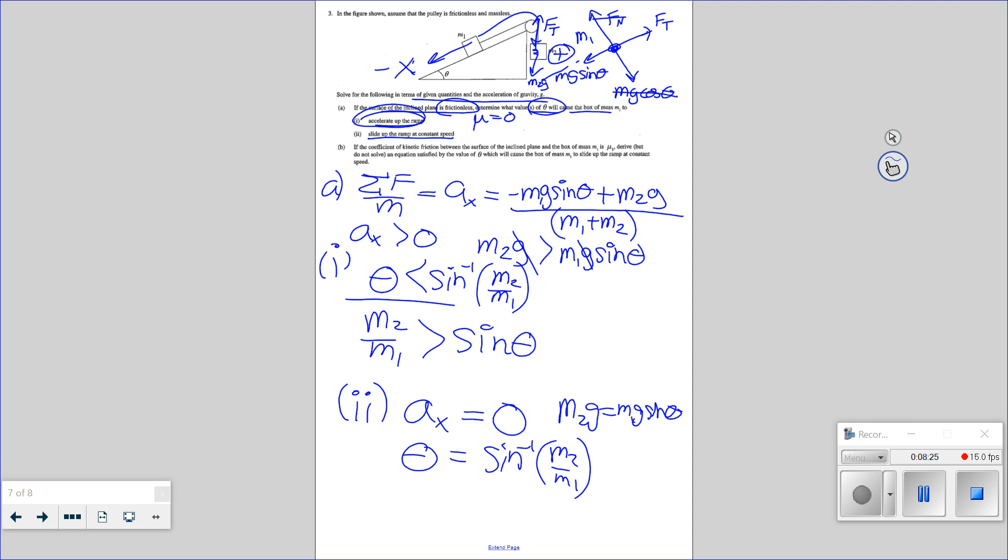it's easier to do part two and solve where they're exactly equal and acceleration is exactly zero. But think of the extreme case. Okay. If theta approach zero, then I'm on a flat horizontal surface, and yeah, of course they accelerate because there's gravity on one and there's no other forces on the other.